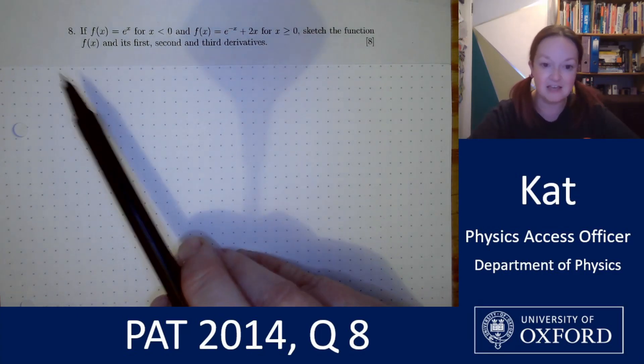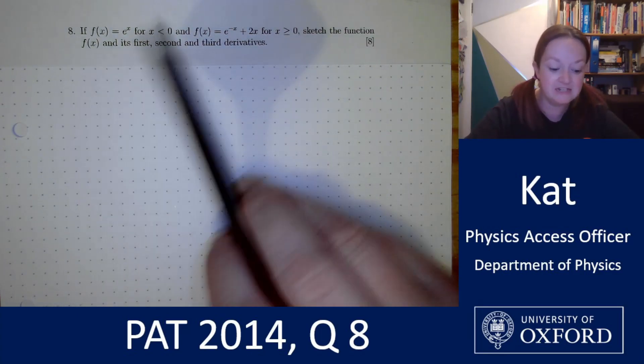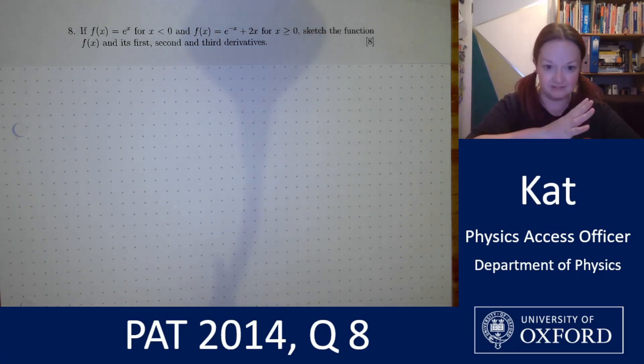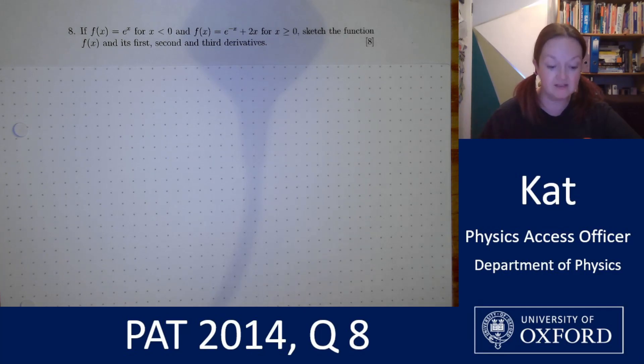This question asks if f(x) is equal to e to the x for x is less than 0 and f(x) is equal to e to the negative x plus 2x for x is greater than or equal to 0, sketch the function f(x), and its first, second and third derivatives.